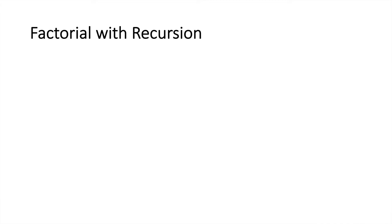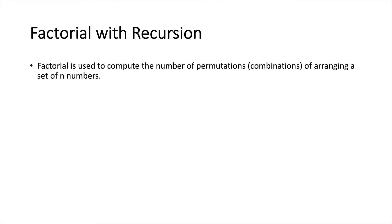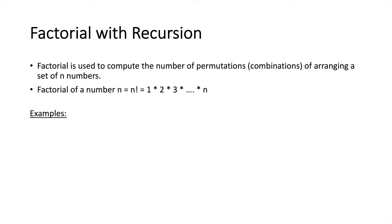Now let's move forward to understand how we can calculate the factorial of a number with recursion. A factorial is used to compute the number of permutations of arranging a set of n numbers — that is, in how many different ways can you arrange a set of n numbers — which in terms of mathematical formula is denoted by an exclamation mark, and is equal to the multiplication of all the numbers starting from 1 up to n. For example, the factorial of 3 would be 1 × 2 × 3, which is equal to 6. Similarly, the factorial of 6 would be all the numbers multiplied from 1 to 6, which is equal to 720.